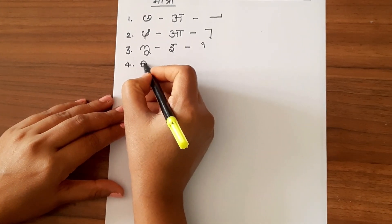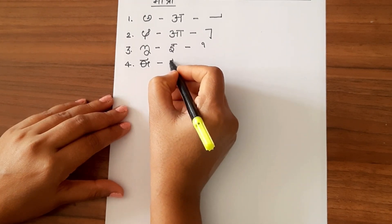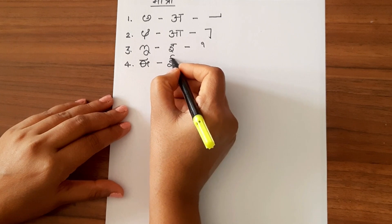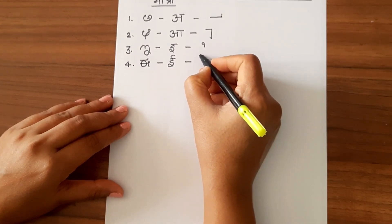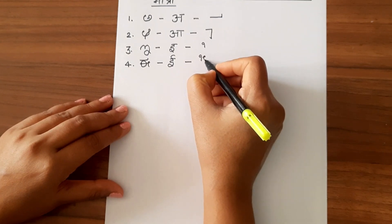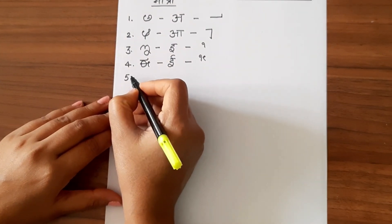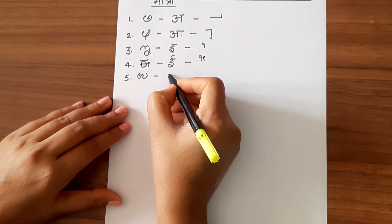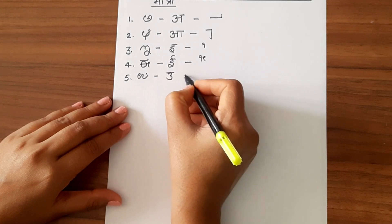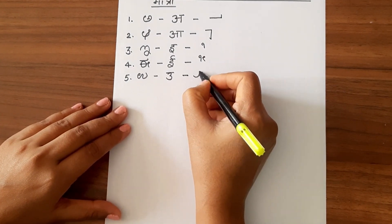Now fourth one is dirg ii or bari ii, and that is how we write the matra of E. Now fifth one is and this is the matra.